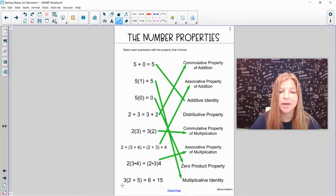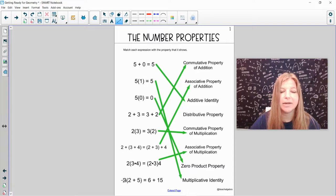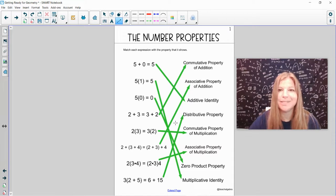And then our last one, 3 times the sum of 2 plus 5 equals 6 plus 15. I can see here that I'm doing my distributive property. 3 times 2 is 6. And 3 times 5 is 15. And so that would be an example of using the distributive property.